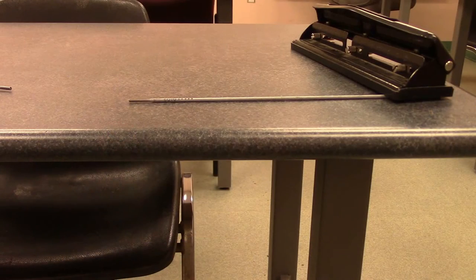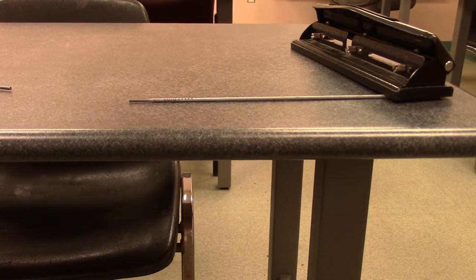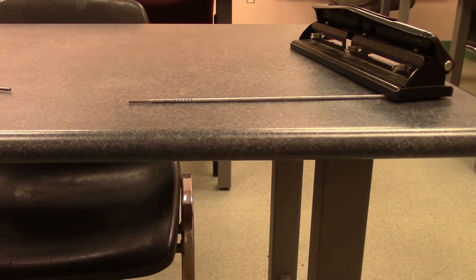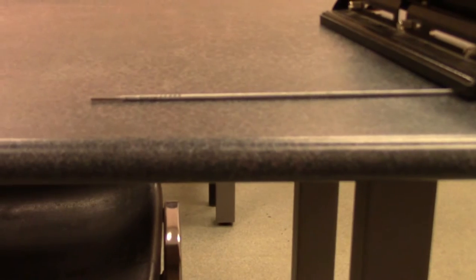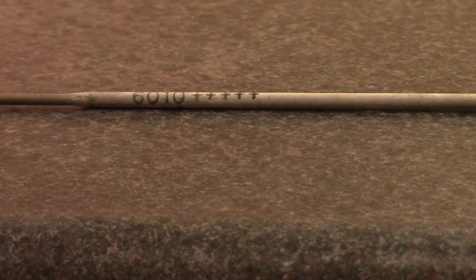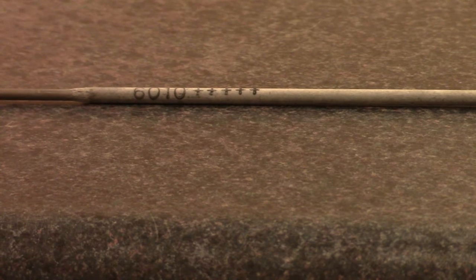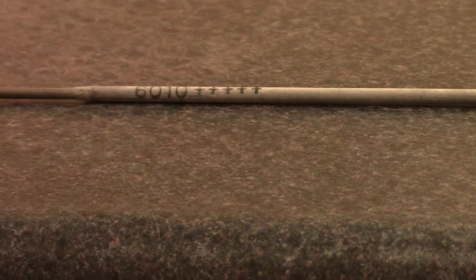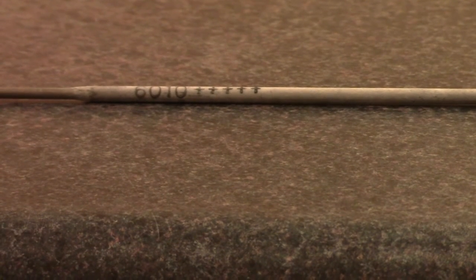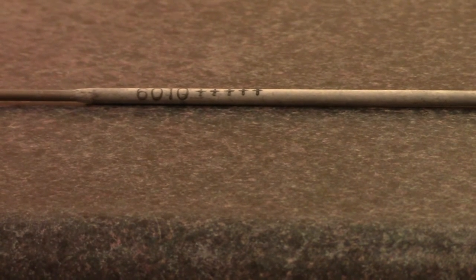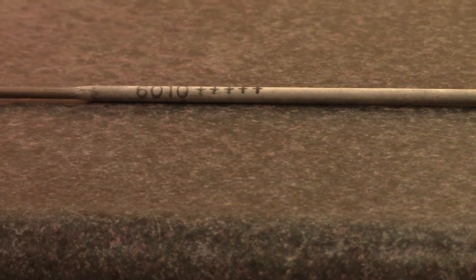This is a 6010 rod, 3/32nds diameter. I put a three-hole punch, it kept rolling on me, so I could see the designations on the end. So what we're going to do is we're going to zoom in on the designations on the end. That's all it's going to say is 6010. Sometimes there's brand names on them, but that tells you that it's a 60,000-pound minimal tensile strength, all-positioned rod with a cellulose-based flux.